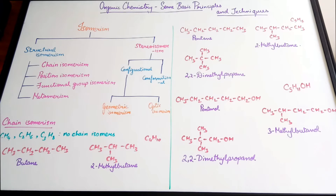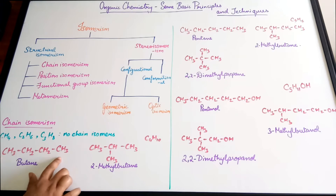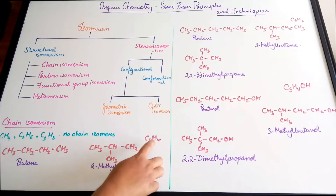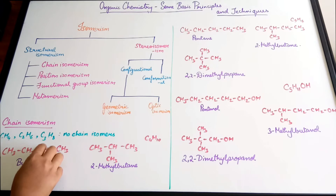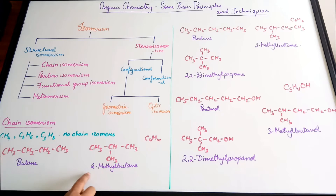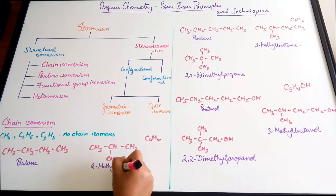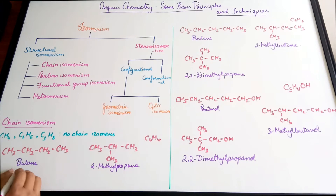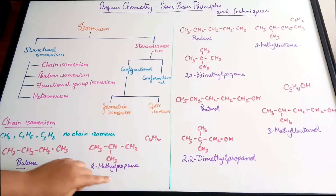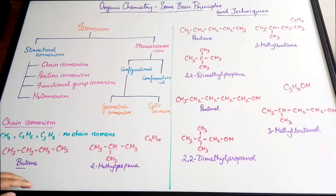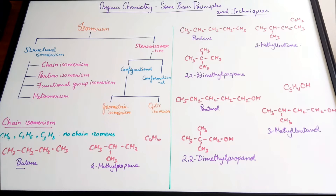Methane, ethane, and propane do not show chain isomerism. In the case of butane, which has a molecular formula of C4H10, the straight chain form can rearrange — one carbon is shifted to form a branch, giving 2-methylpropane. Both butane and 2-methylpropane have the same molecular formula C4H10, but differ in chain length.